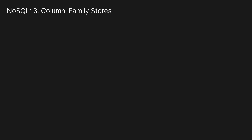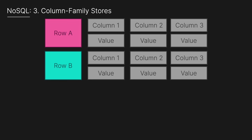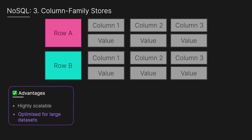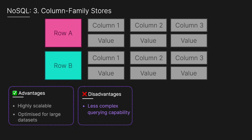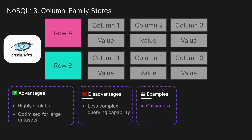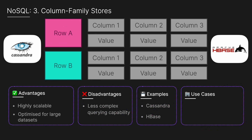Next, we have column family stores, which store data in tables but each row can have a variable number of columns. The advantages include high scalability and optimization for large data sets and analytical queries. The disadvantages include less complex querying capabilities compared to relational databases, and they can require careful schema design. Examples include Apache Cassandra and HBase, and they're commonly used in big data analytics, large-scale logging, and time series data.